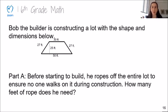Now we're going to look at a problem together. It says, Bob the Builder is constructing a lot with the shape and dimensions below. Part A. Before starting to build, he ropes off the entire lot to ensure no one walks on it during construction. How many feet of rope does he need? The first thing I'm going to ask myself is, does this question require me to find the area? And I'm going to use my key point to help me. What do you think? Do you think we're finding the area to answer part A?